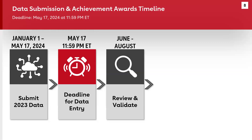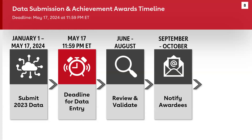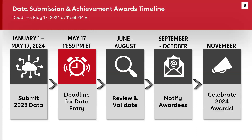The AHA and the AMA will be reviewing and validating the data submitted to classify awardees by award level. You might hear from either our national or local team most likely around June, and we'll reach out if we have any questions about your submission. Your response will help us confirm your appropriate award level, so please keep an eye out for an email from us between June and August. During the fall, we'll notify 2024 awardees with a congratulations email and toolkit, and we'll celebrate your accomplishments on our program websites, at scientific sessions, and in a published national ad.